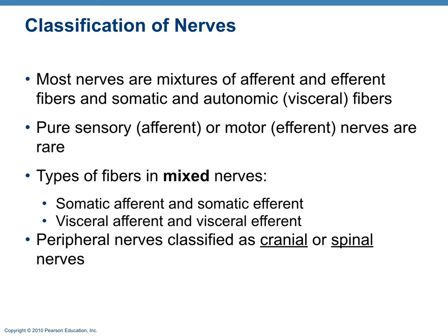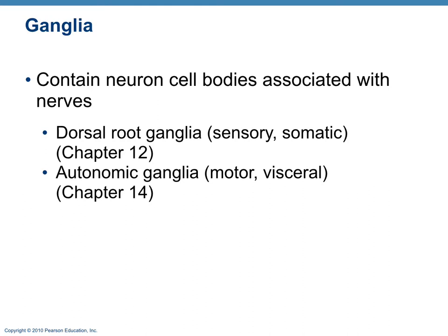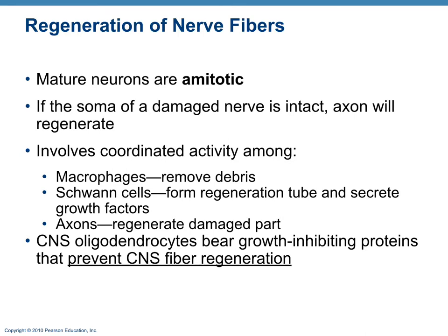Ganglia are groupings of nerve cell bodies; we'll see the dorsal root ganglia in lab. Regarding regeneration of nerve fibers, neurons are amitotic — they don't undergo mitosis. If the neuron's cell body (soma) is damaged, the axon will not regenerate. However, if the soma remains intact, the axon can regenerate. This requires macrophages to remove debris, Schwann cells to form a regeneration tube and secrete growth factors, and then the axon regenerates.